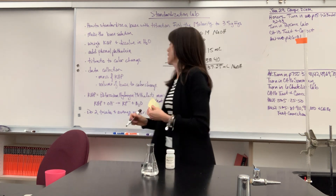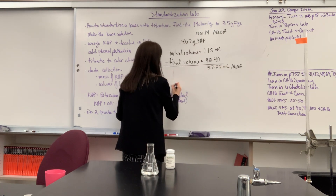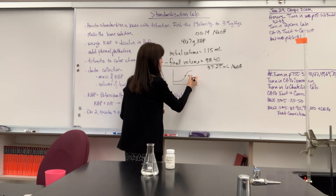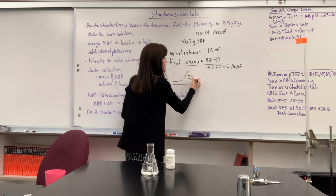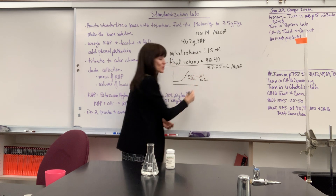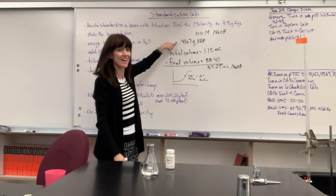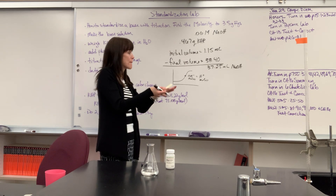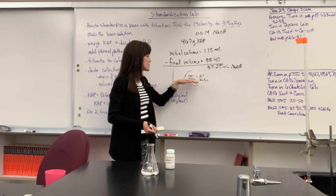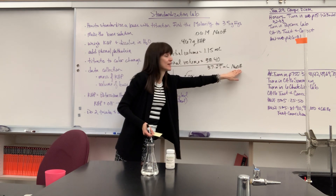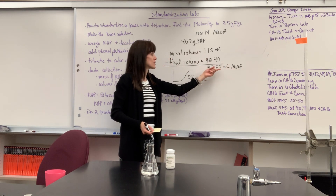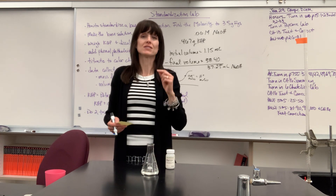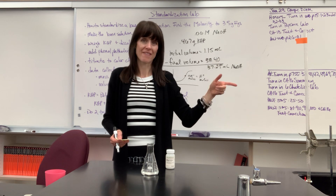Now remember what this means. That right there tells us we have this acid, the KHP, and we hit the equivalence point — where the moles of hydroxide equal the moles of hydrogen. Here's the cool thing: I know exactly what the moles of hydrogen are from my 0.467 grams. So when we hit that equivalence point, moles of hydrogen equal moles of hydroxide. I've got moles, I have my volume — moles divided by liters is molarity. And we just standardized; we just found the exact molarity of that solution.